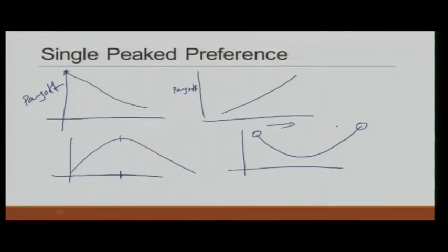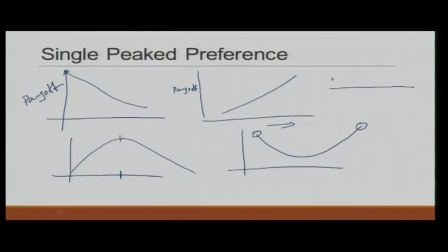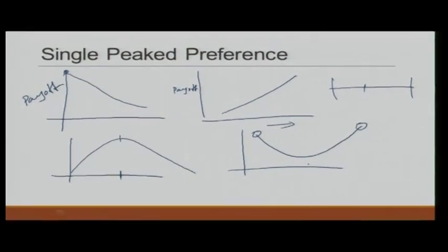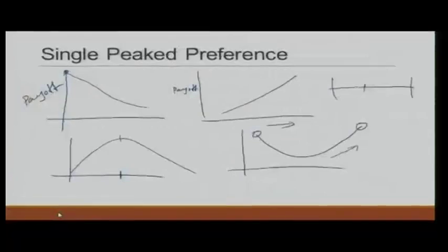This is a reasonable assumption in politics: if I like the extreme left, I would not have another peak — as I move away from my ideal position, I become worse off. The requirement mirrors the ice cream problem, where consumers were located at a point on the beach and moving away from that point made them worse off. If we allowed non-single-peaked preferences, someone could become worse off initially but then better off again as policy moves further away. The attempt is to make the electoral problem structurally the same as the ice cream vendor problem.